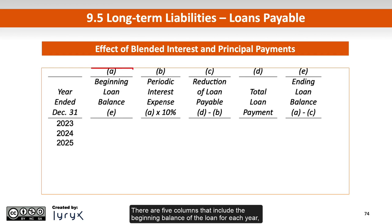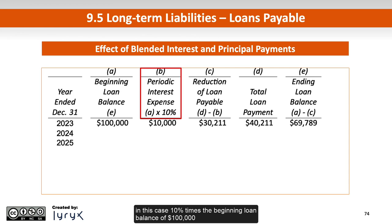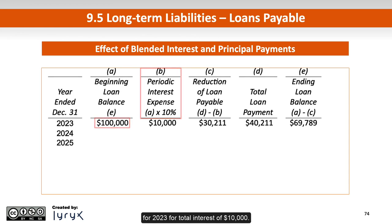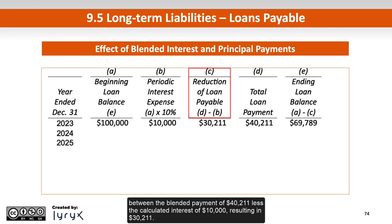There are five columns that include the beginning balance of the loan for each year; the interest expense, calculated by multiplying the interest rate — in this case 10% — times the beginning loan balance of $100,000 for 2023, for total interest of $10,000. The next column shows the reduction of the loan principal, which is the difference between the blended payment of $40,211 less the calculated interest of $10,000, resulting in $30,211.